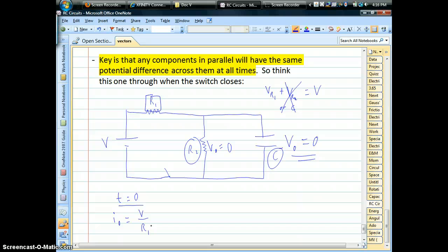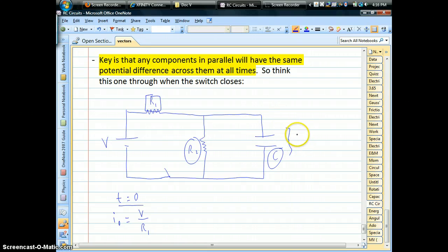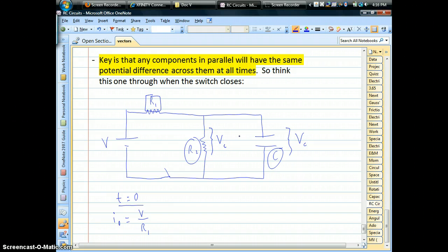Okay, but now, as time goes on, we know that the capacitor is going to start to charge up. I'm going to erase this. So as you start to build up some charge on the capacitor, you start to get some voltage across the capacitor. And at any given instant, once again, whatever that voltage is has to be the voltage across R2.